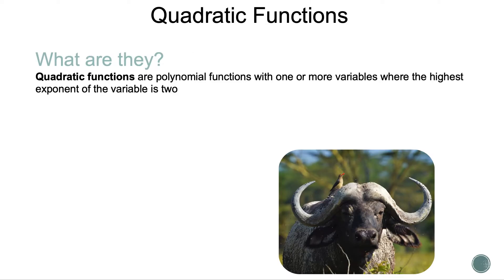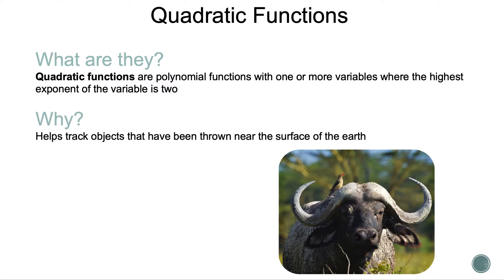Quadratic functions are polynomial functions with one or more variables where the highest exponent of the variable is 2. They help track objects that have been thrown near the surface of the earth.